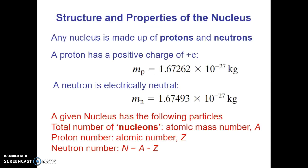When it comes to the structure of the nucleus, it's composed of protons and neutrons. Protons are particles that have a positive charge of plus e. Remember, e is the charge of an electron, 1.6 times 10 to the negative 19 coulombs. The mass of a proton in kilograms is 1.67262 times 10 to the negative 27 kilograms.